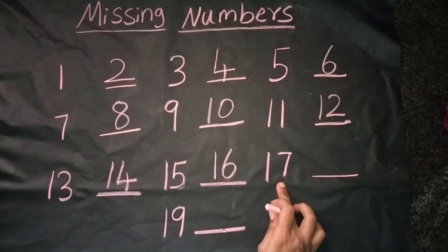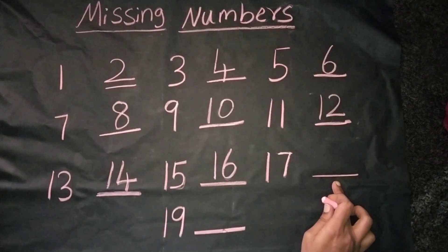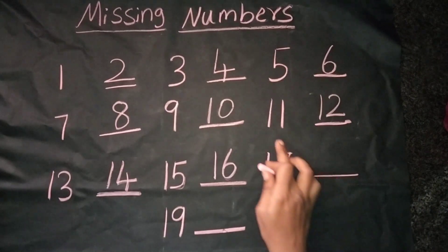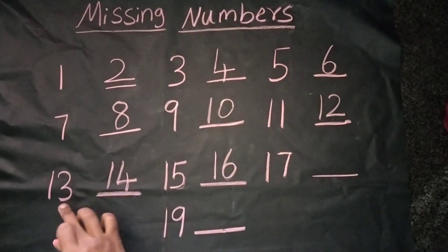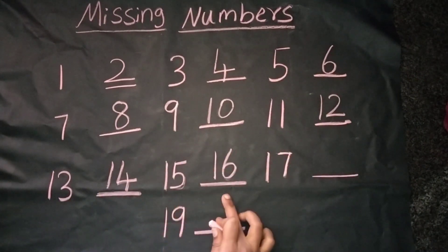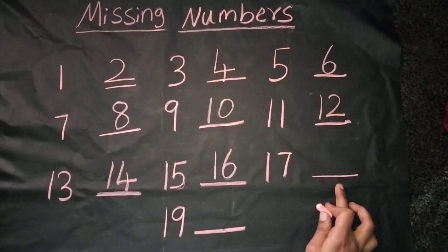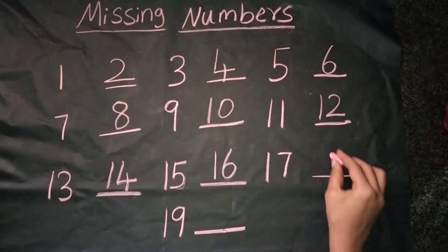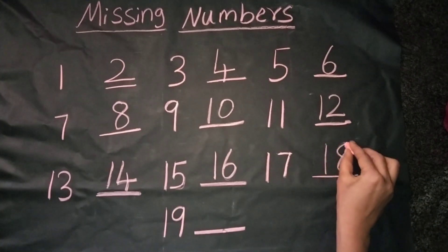We can see the number 17. The next number is — we should count from 11: 11, 12, 13, 14, 15, 16, 17, 18. Yes, it's correct. The number is 18.